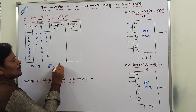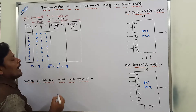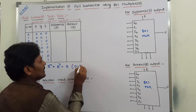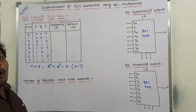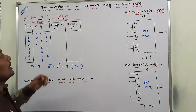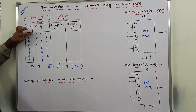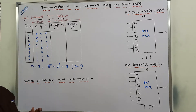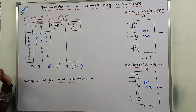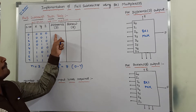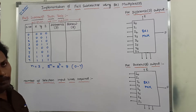Difference can be denoted by capital D and borrow can be denoted by capital B. These are the three inputs X, Y, and Z. Small n is nothing but the number of inputs. How many number of inputs are there? Three inputs are there. With three inputs, how many number of possible input combinations exist? That is 2 power n possible input combinations. Substituting n equal to 3, we get 8 possible input combinations, that are 0 to 7. Every possible input combination can be represented in binary with three bits, from 000 to 111. Each and every possible input combination is called a minterm.